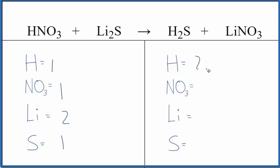Product side, two hydrogens. We have one nitrate ion, one lithium, and one sulfur. So that makes it a lot easier and neater. You get the same answer either way. This is just faster.